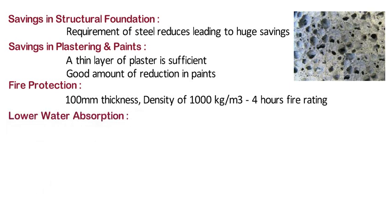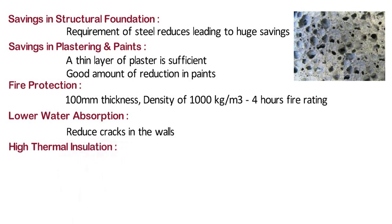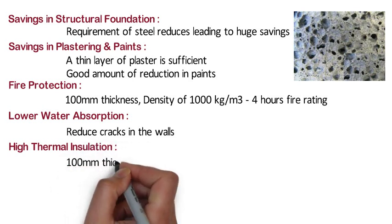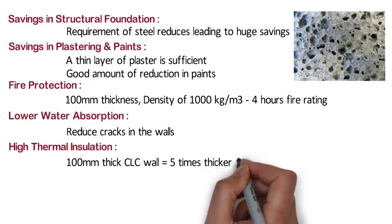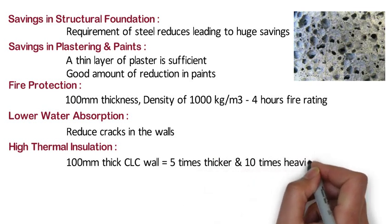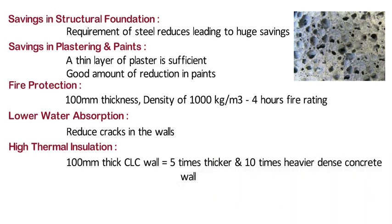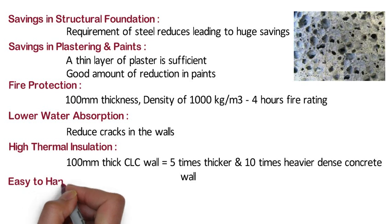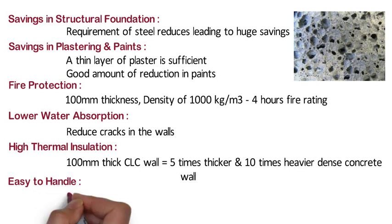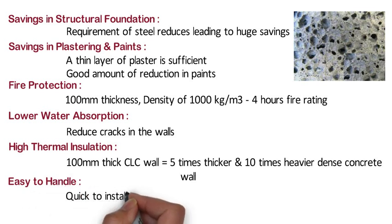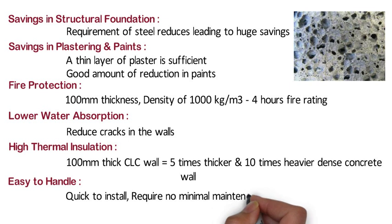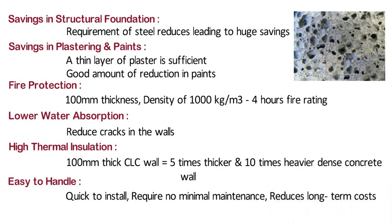Lower water absorption: the low water absorption property of these blocks will help to reduce the cracks in the walls. High thermal insulation: thermal insulation performance of 100mm thick CLC wall is equivalent to 5 times thicker and 10 times heavier dense concrete wall. Easy to handle: foam concrete blocks are easy and quick to install and require minimal maintenance, which reduces long term costs.